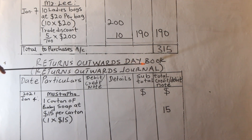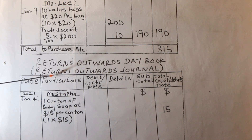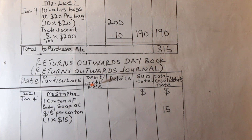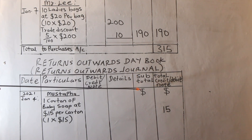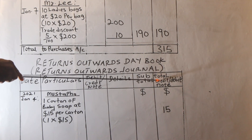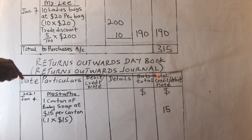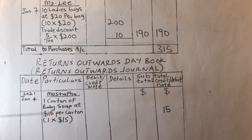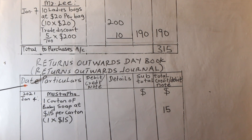The Return Outwards Day Book, also called the Return Outwards Journal, has the following columns: the date, the particulars, the debit or credit note number, the details, the sub-totals, and then the total credit or debit note column. If you look carefully, the ruling of the Return Outwards Journal and that of the Purchases Journal are almost the same.